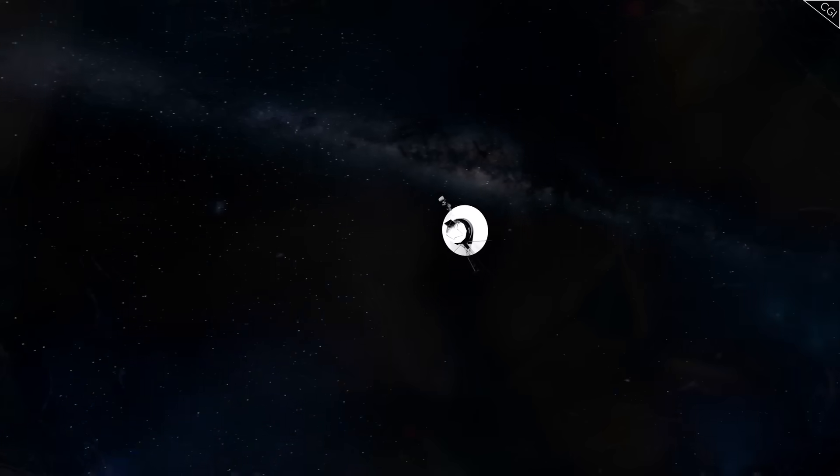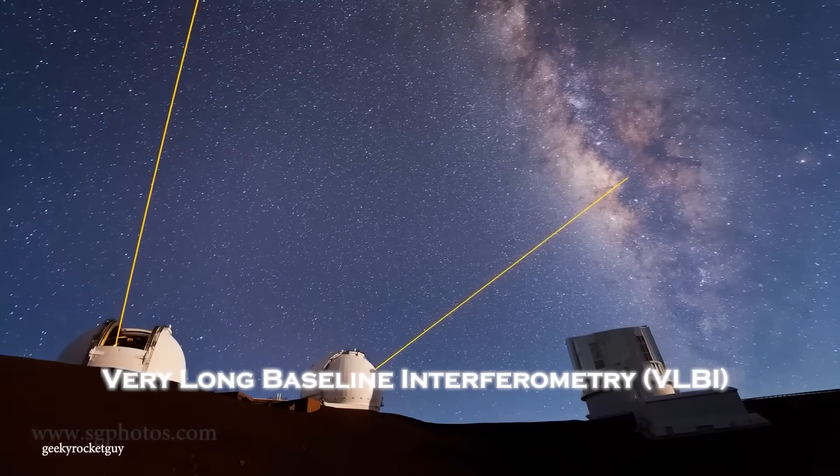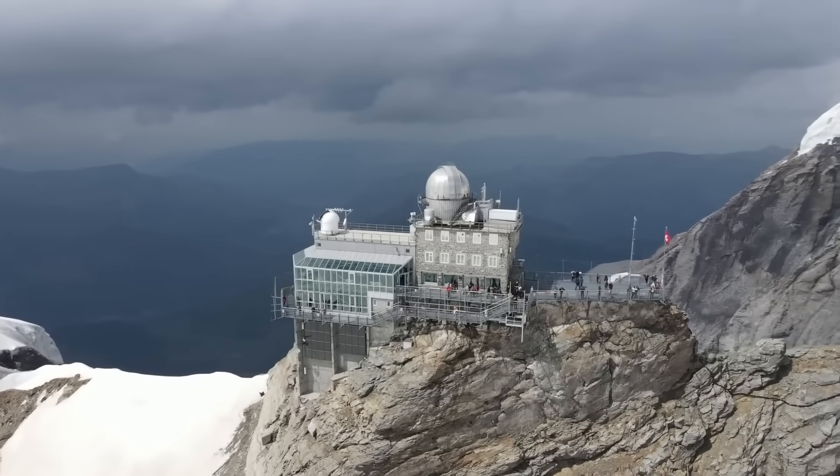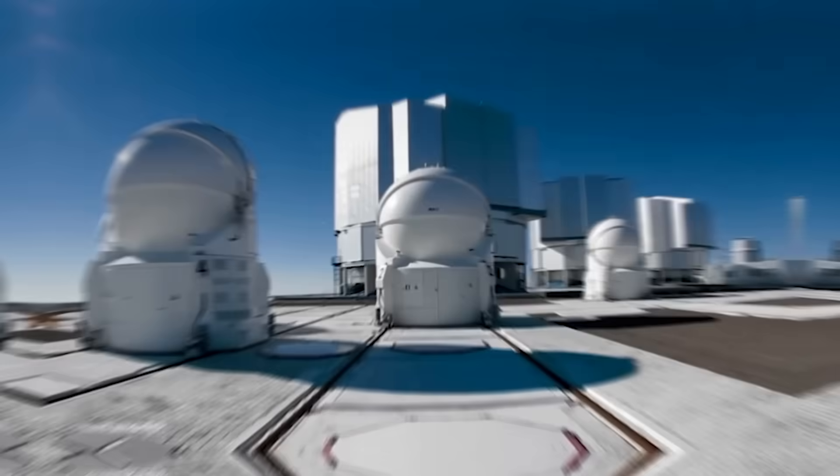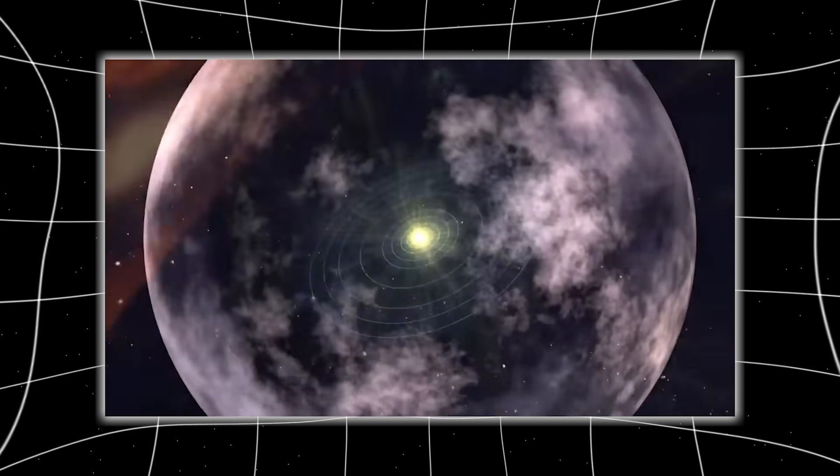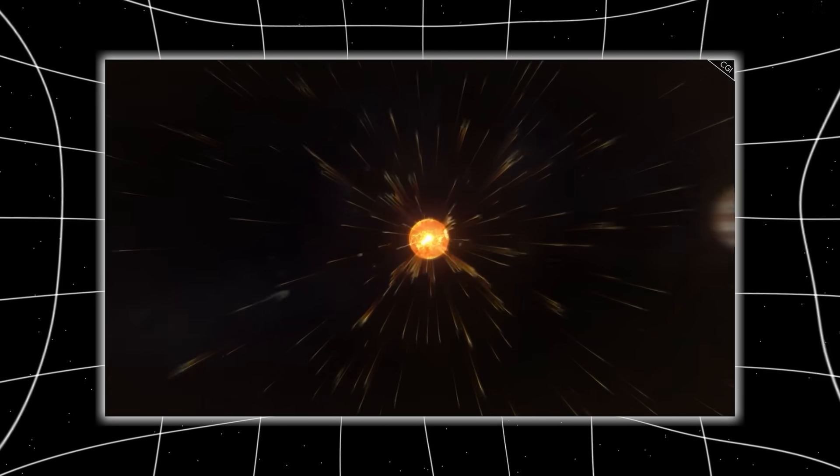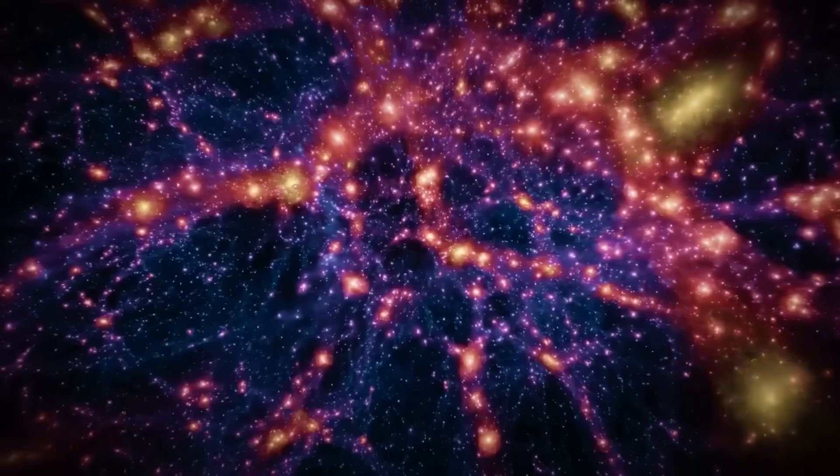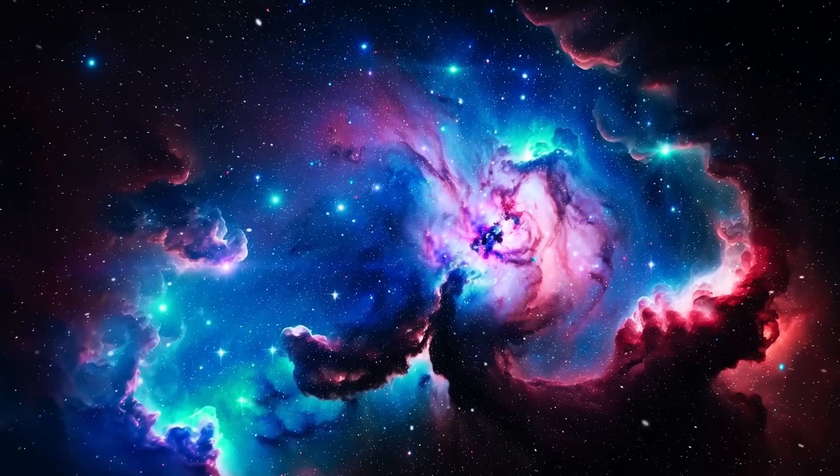And then, the alignment began. Without fanfare, without warning, without even a single official press release, the global network of very long baseline interferometry, VLBI telescopes all began reorienting. Not toward any known star, planet, or galaxy, but to an empty patch of sky near the ecliptic plane. Astronomers refused to explain. Politicians ignored the shift. But amateur radio operators noticed the frequency. A harmonic blend of 52 hertz, known as the loneliest sound in the ocean, now echoing through space. It was Voyager's final note, replicated, amplified, and redirected. Toward what? No one could say. But one thing was clear. Something had answered. And every dish on Earth was now listening, not by command, but by instinct. As if the world itself had just remembered something long forgotten. Something ancient. Something already written in the stars.